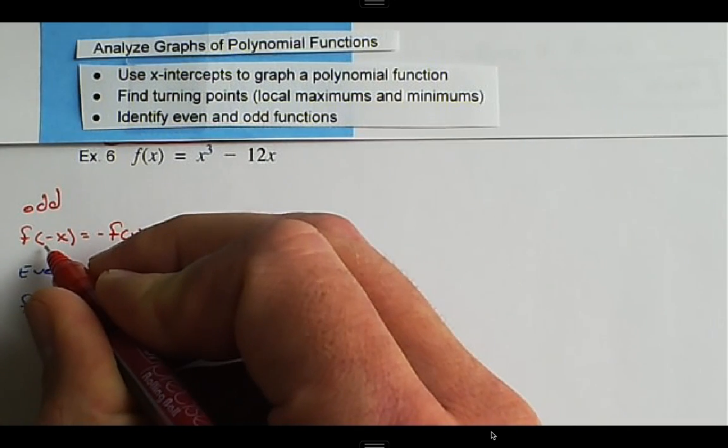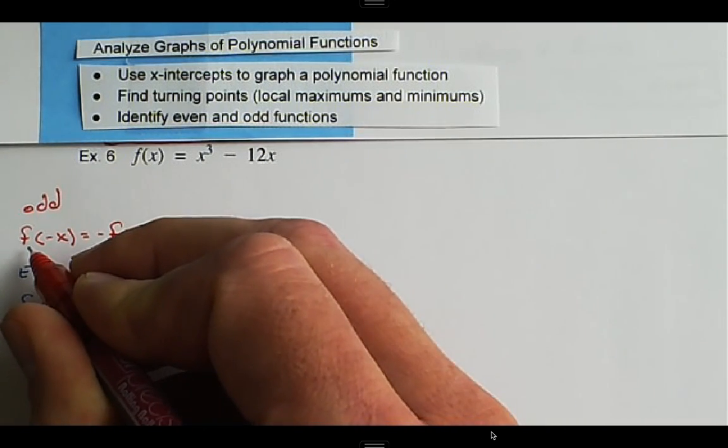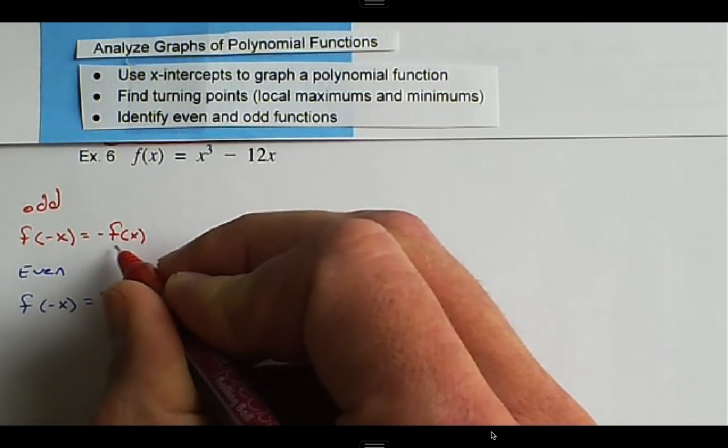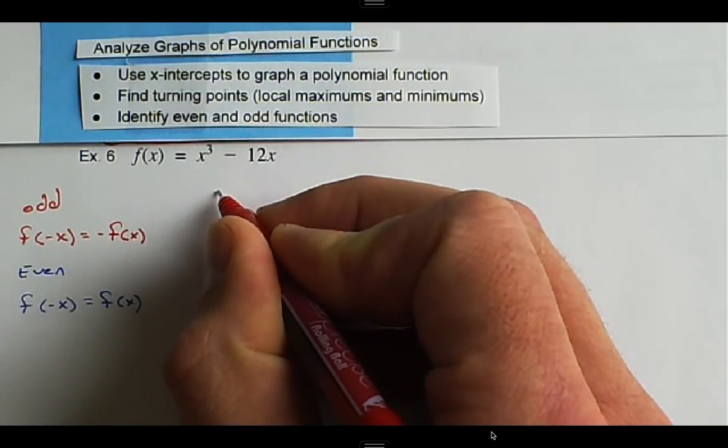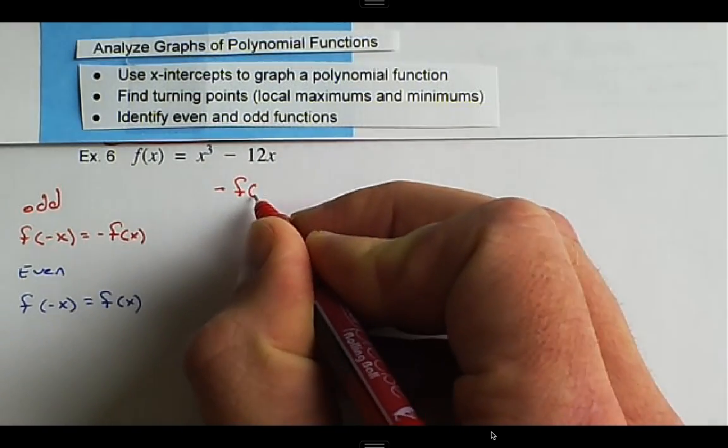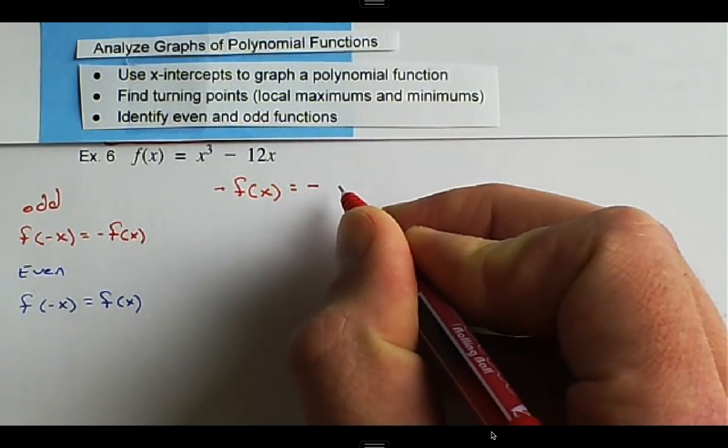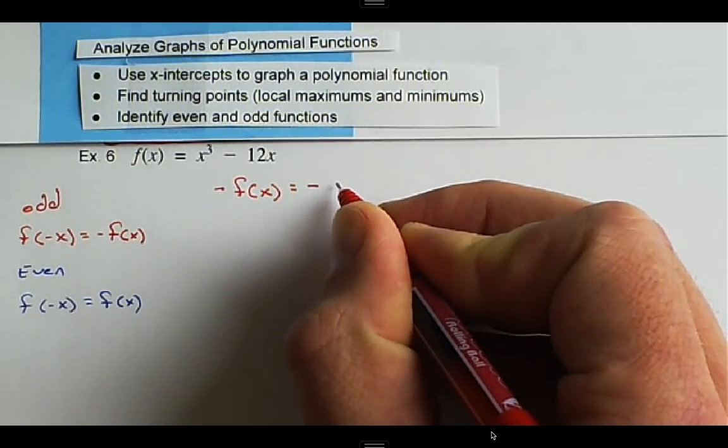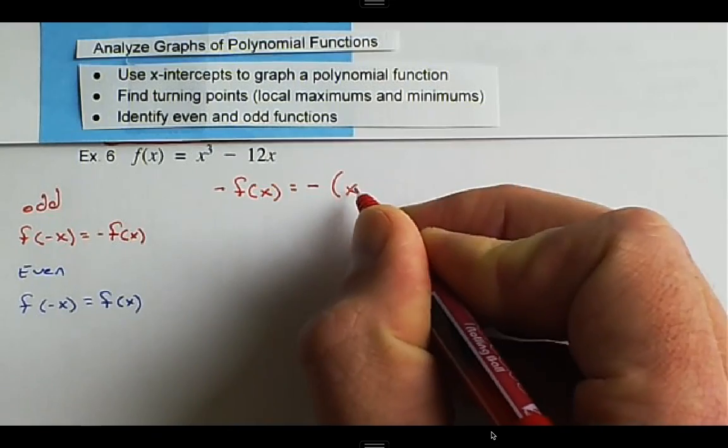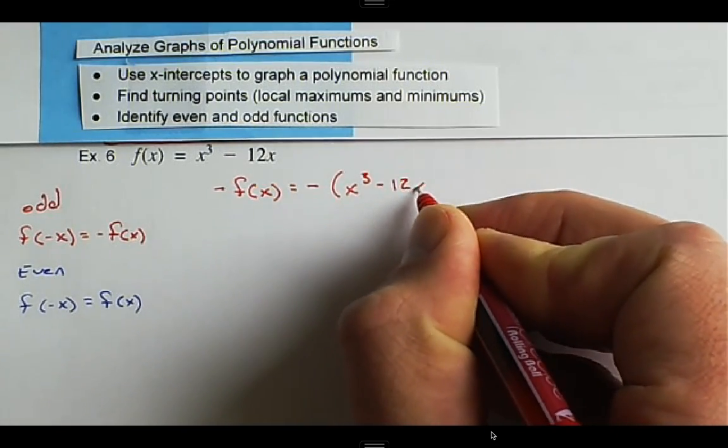So first thing we want to do is we want to see what the function is if we negate the whole thing. So negate the function f(x), that's equal to the negative of x³ - 12x.